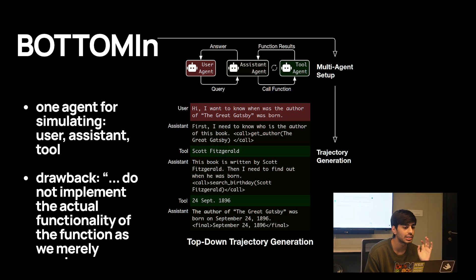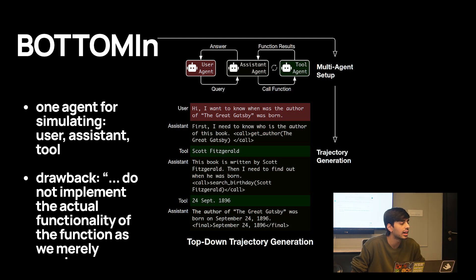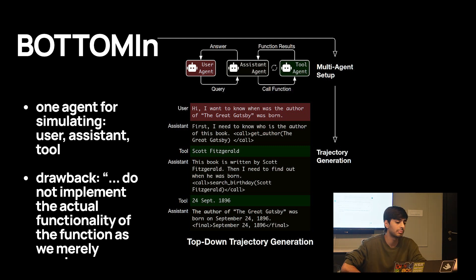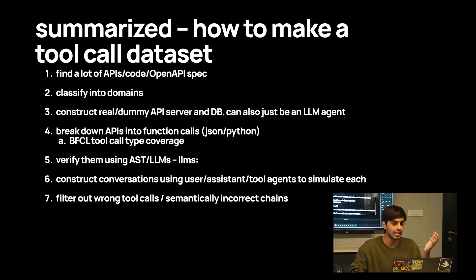In practice, the most common real-world tool uses are: browsers and search APIs; code sandboxes to execute Python functions; and coding tools like git clone, change file directory, run commands — basically what something like Cursor uses. These are all tool calls.